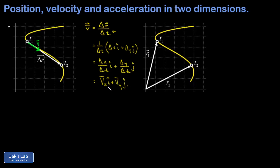Just like in one dimension, we obtain the instantaneous velocity vector by finding the average velocity over a very small time interval. The idea is that if we let the time interval become small enough, the velocity vector doesn't have time to change. Geometrically, we compute the average velocity from t1 to t2, then move t2 closer to t1, compute the displacement vector, and divide by the amount of time it took to get between those points.